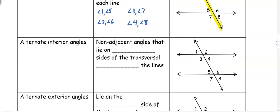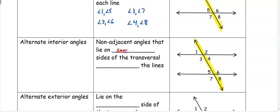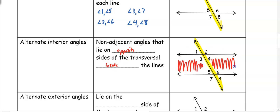Another type using a transversal is alternate interior angles. Alternate interior angles are non-adjacent angles that lie on opposite sides of the transversal and are inside the lines — between the two lines is the interior. Because they're alternate, they're on opposite sides of the transversal. Examples would be angles 3 and 6, and angles 4 and 5.